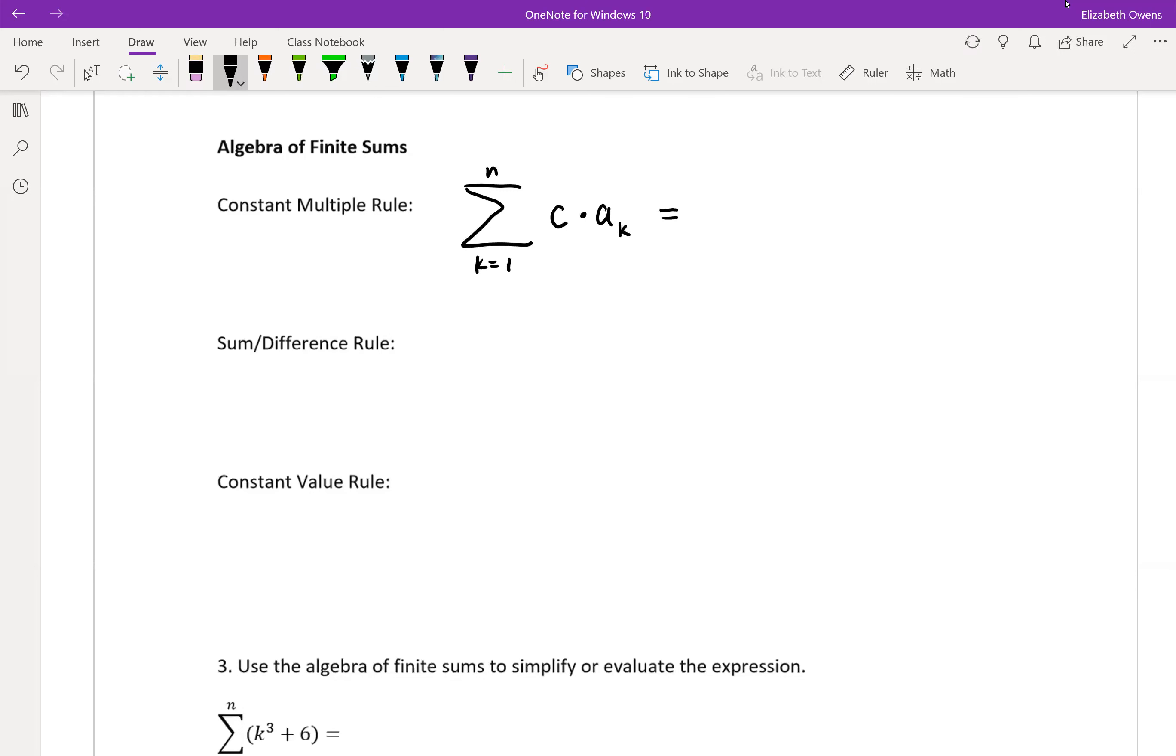The constant multiple rule says that you can actually just take that constant and pull it out of the summation altogether out front, like c times the summation of just the a sub k formula parts.